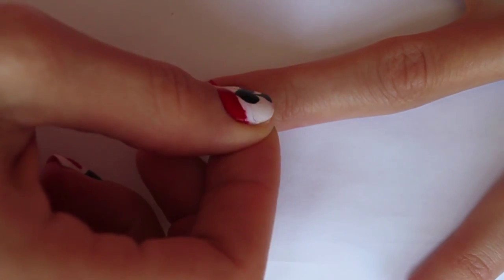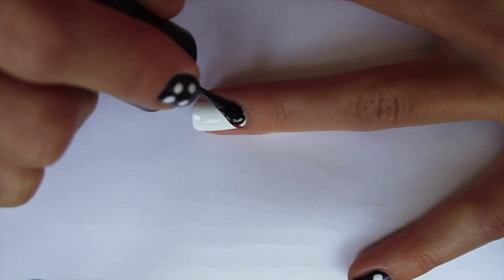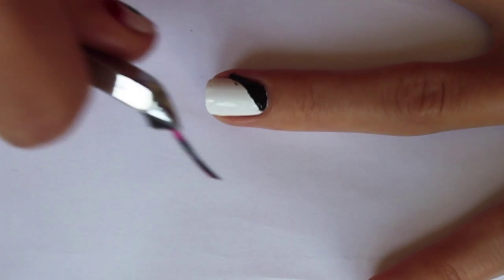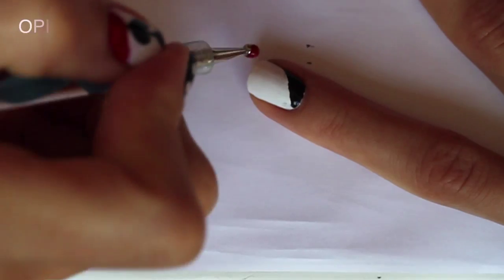For the ring finger, take another cut of tape and put it on your nail as before. Fill the triangle with black polish and carefully remove the tape. Remove the excess with a plain brush if needed.